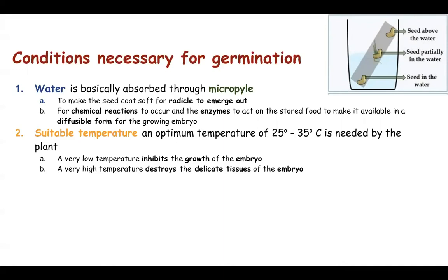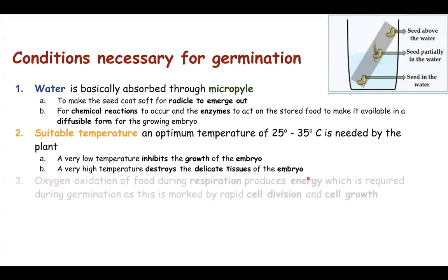In tropical countries like ours, a temperature on the higher range is suitable for plants because they have adapted their body for growth in these conditions. So the temperature required may be a little higher for the optimum germination of the seed.